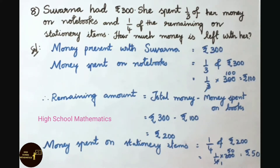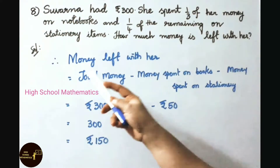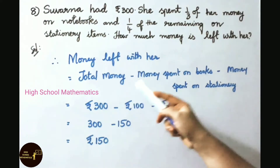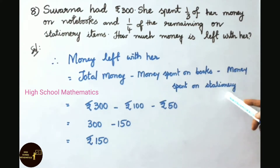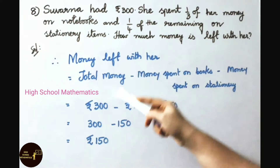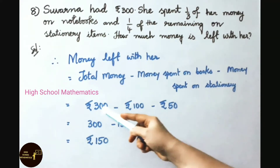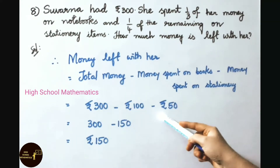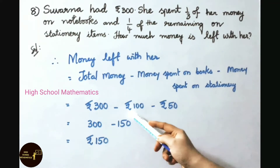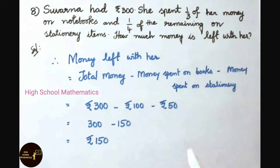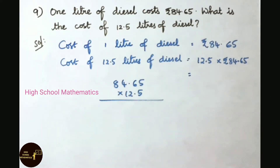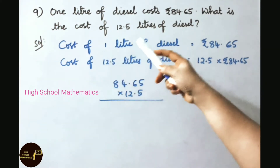Money left with her equals total money minus money spent on books minus money spent on stationary. Total money is 300 rupees, money spent on books is 100 rupees, money spent on stationary is 50 rupees. So 300 minus 100 minus 50: we add 100 and 50 to get 150, then 300 minus 150 equals 150. Therefore, money left with her is 150 rupees.